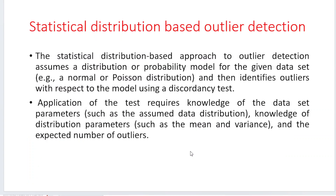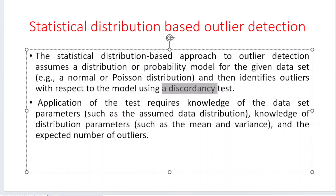What is meant by statistical distribution-based outlier detection? Statistics means nothing but the analysis reports. Based upon the analysis reports, we will try to figure out the outliers in the detection process. Statistical distribution is completely dependent on the distribution functions or the probability models for the given data sets. We can use normal distribution functions or Poisson distribution functions, where we can analyze the outliers with respect to the model using the discordancy test.